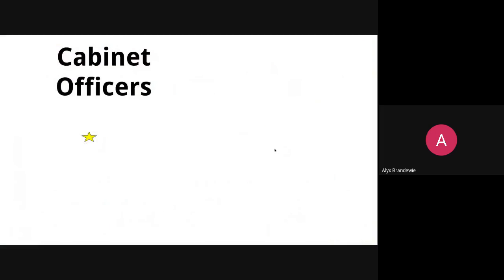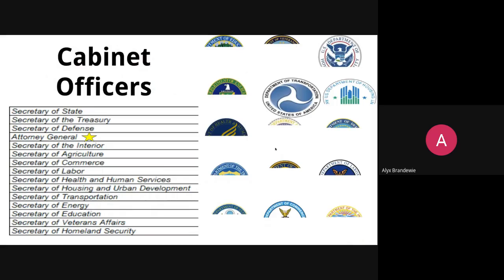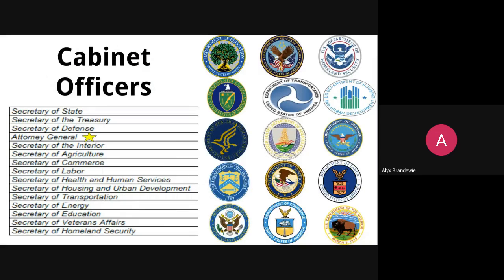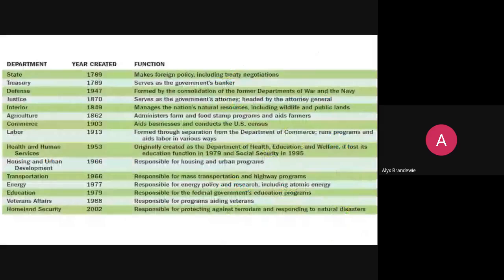The cabinet officers currently serving include the Secretary of State, Treasury, Defense, the Attorney General, Interior, Agriculture, Commerce, Labor, Health and Human Services, Housing and Urban Development, Transportation, Energy, Education, Veterans Affairs, and Homeland Security. It covers just about every piece of American life. These agencies have been created and added to over time, with the most recent being the Department of Homeland Security, created in 2002 as a response to the September 11th attacks.